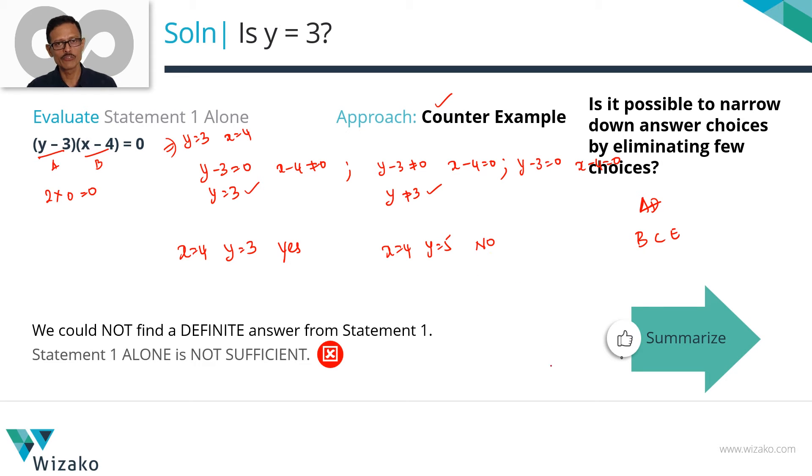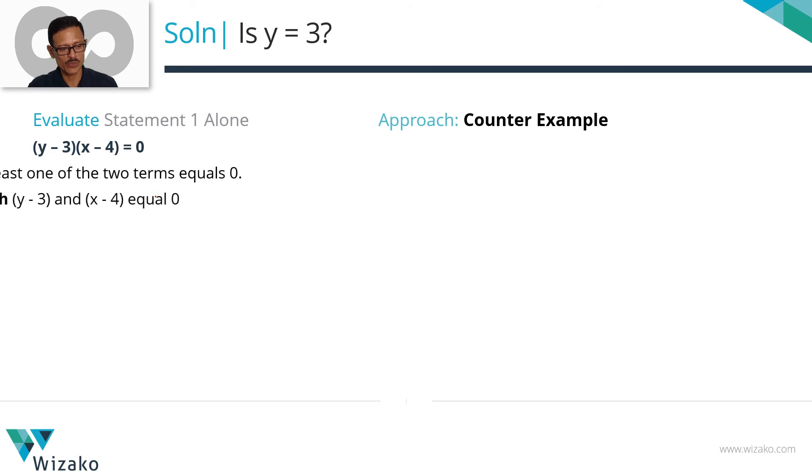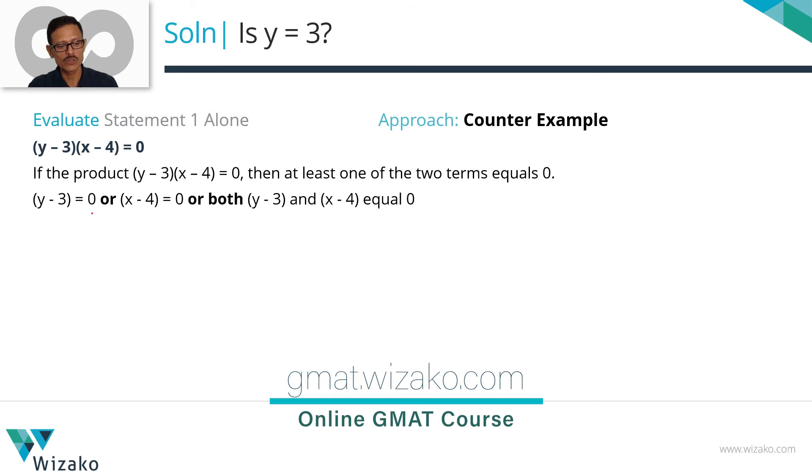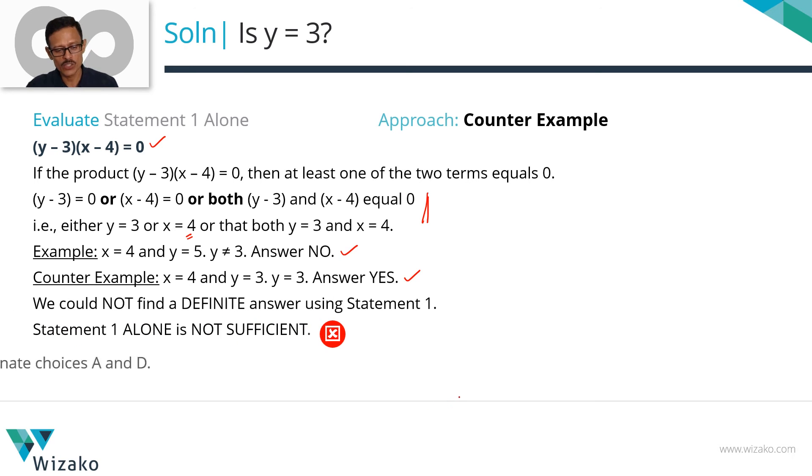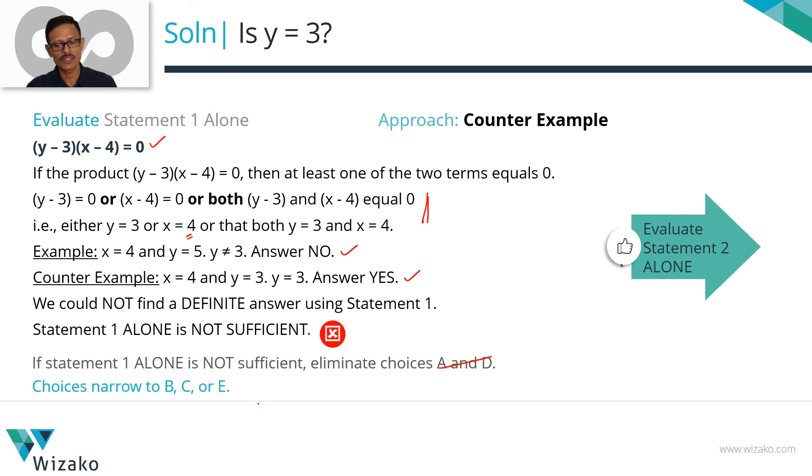Can we narrow down our answer choices? If 1 alone is not sufficient, we can rule out choices A and D. Our answer choices narrow down to B, C or E. Let's summarize at this stage with statement 1 before we move on to evaluating statement 2 alone. (y-3)(x-4) equals 0. What does this mean? (y-3) equals 0 or (x-4) alone is equal to 0 or both these numbers are 0. This translates to y equals 3 or x equals 4 or that both y equals 3 and x equals 4. When we say y equals 3 or x equals 4, in this instance, y need not be 3 is what is implied. We also looked at a counter-example to check this out.